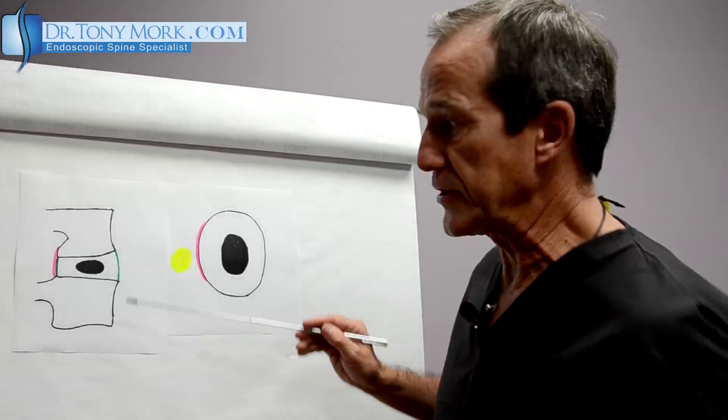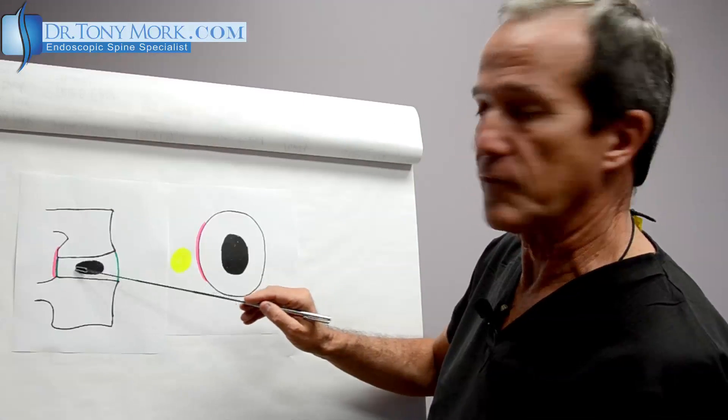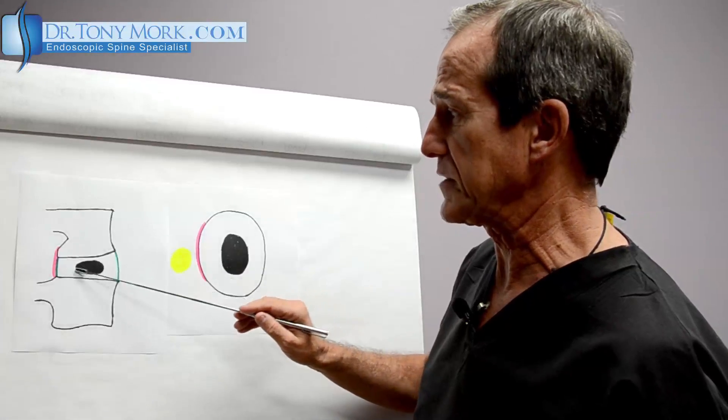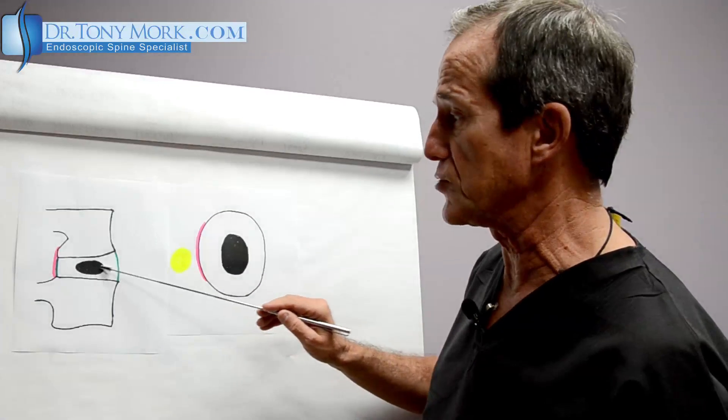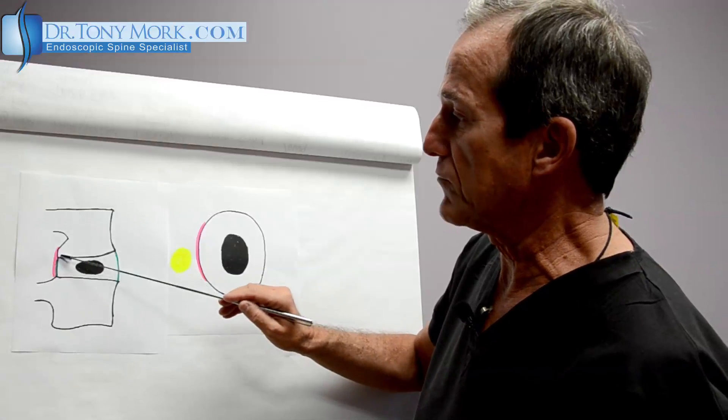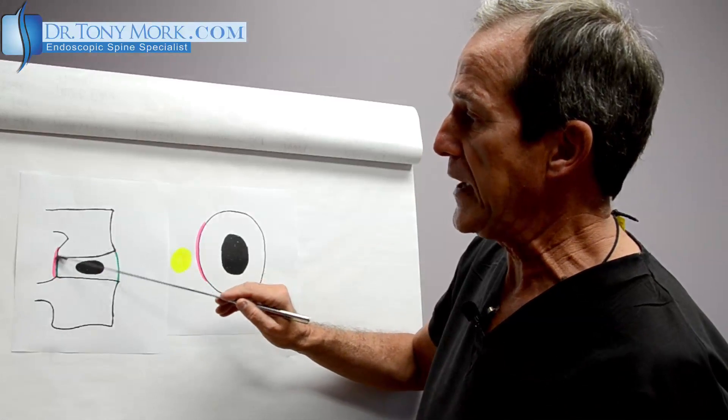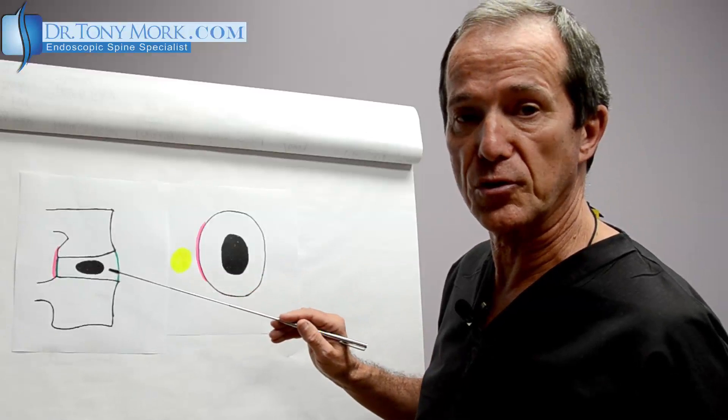This is a normal disc. This is the nucleus of the disc, the center. What people call a liquid center but it's not really liquid. It's almost like soft shrimp meat usually. The green is the covering of the annulus which is the covering of the disc. The pink is the posterior longitudinal ligament.